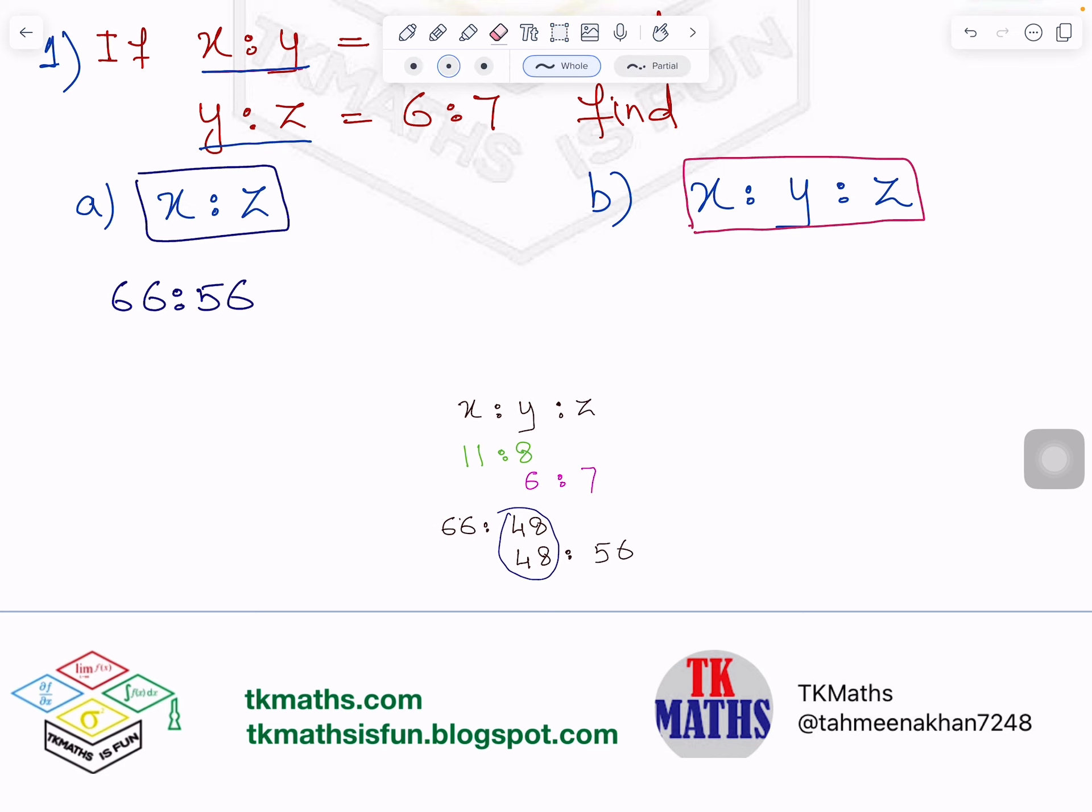Now because it is ratio, I will simplify it. I will cancel by the table of 2. 2 times 3 is 6, 2 times 3 is 6. 2 times 2 is 4, 1 will come here, 2 times 8 is 16. Now can I cancel it by any table? No, so it will be 33 is to 28.